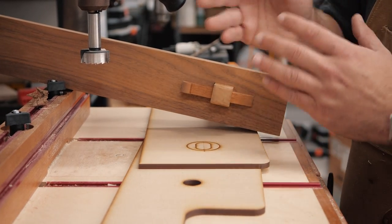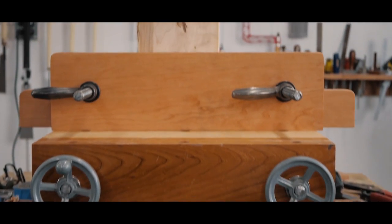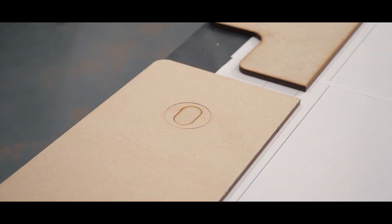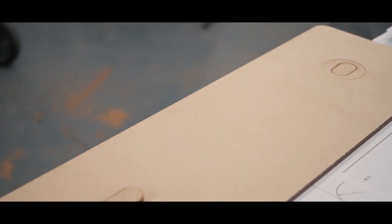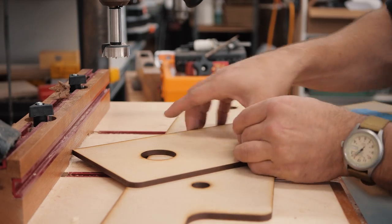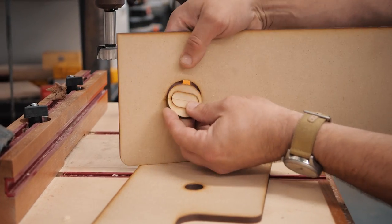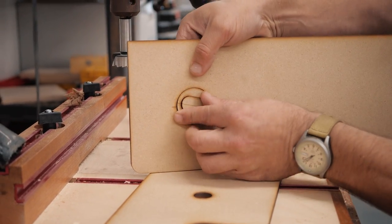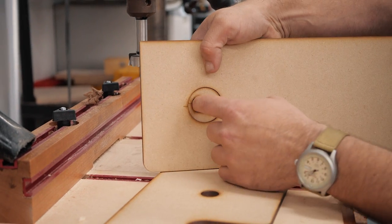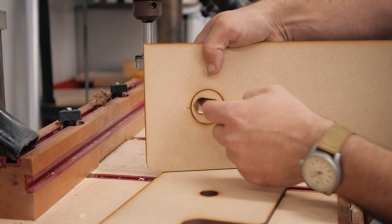Forstner bits are great for overlapping holes. They're also great for my moxon vise. For example, in my moxon vise template, it's a multi-step Forstner bit operation. So you drill this outside hole first and then you put the insert in. And then you use a smaller Forstner bit and drill on both sides and then down the middle.